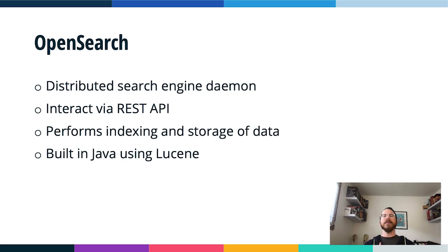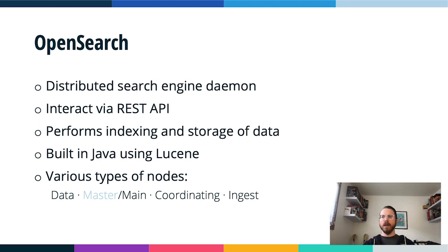OpenSearch is built in Java using Lucene — a longstanding, well-regarded search library that powers a lot of the core functionality. We have team members working directly with Lucene, which powers many search implementations across the software world. It has various node types: data nodes (which we're moving away from calling 'master' to better terminology), coordinating nodes, and ingest nodes — each playing a different role.